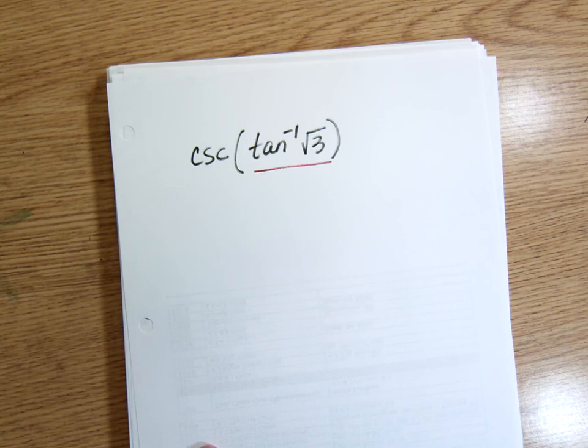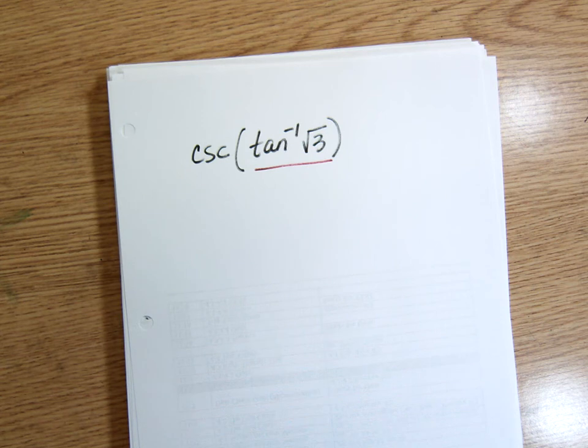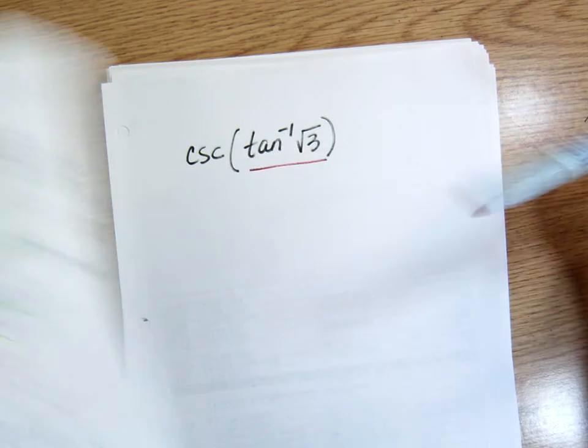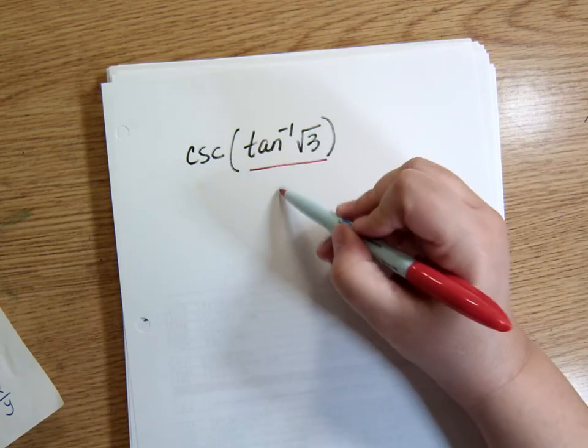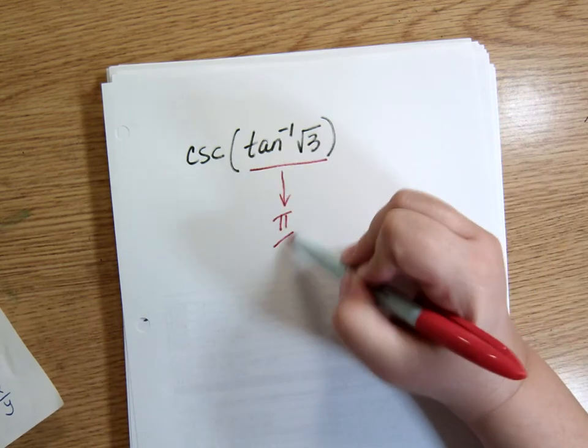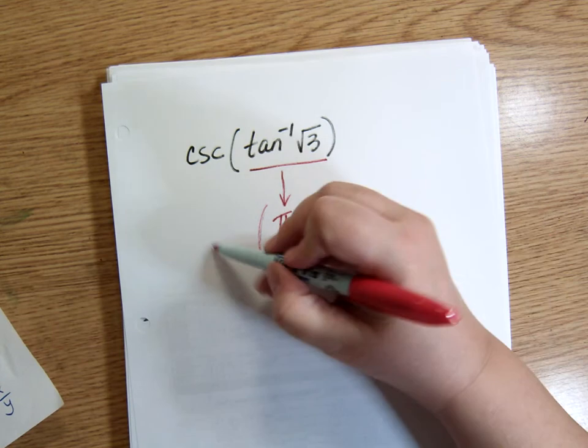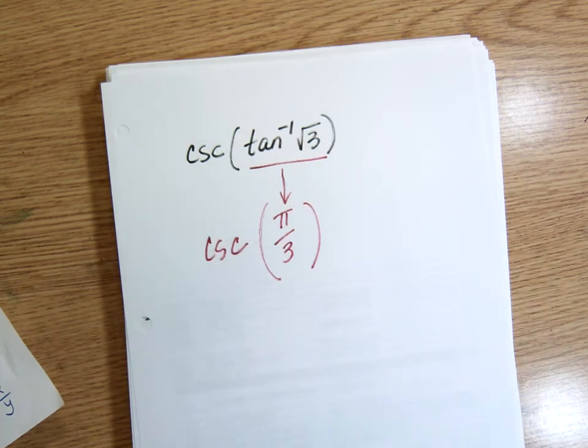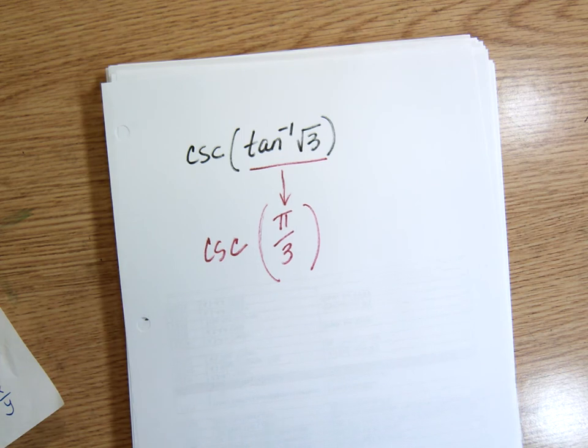Inverse tan of square root of 3. So I'm looking for where tangent has a value of square root of 3 that's positive. Positive means I'm looking in the first quadrant. Square root of 3 is going to be at pi over 3. So all of this becomes pi over 3. And now I'm trying to find the cosecant of pi over 3. I don't worry about the cosecant part until I've found what's inside the parentheses.